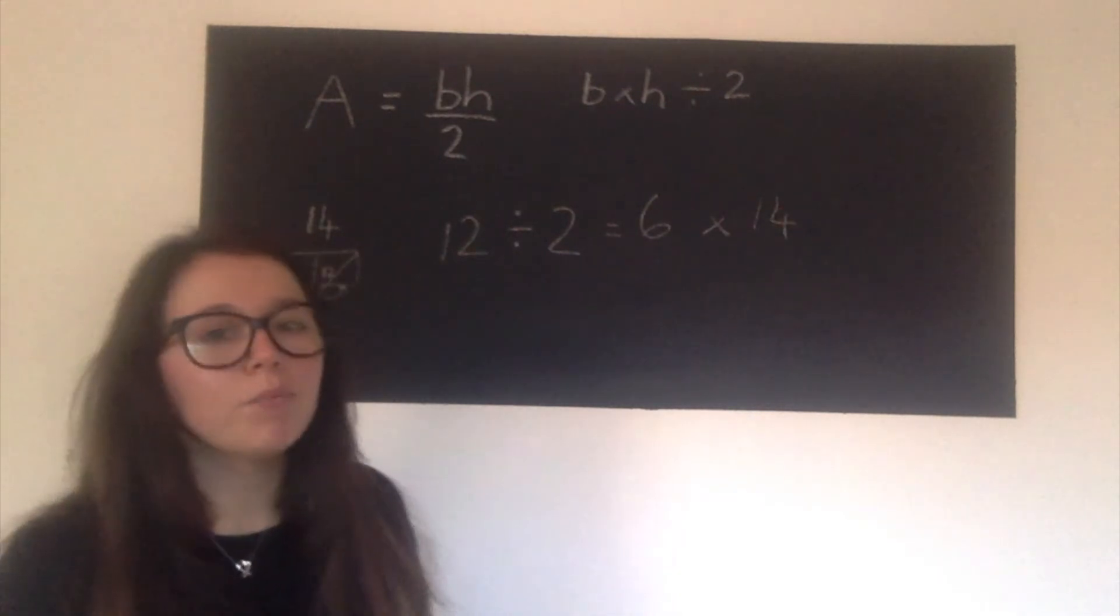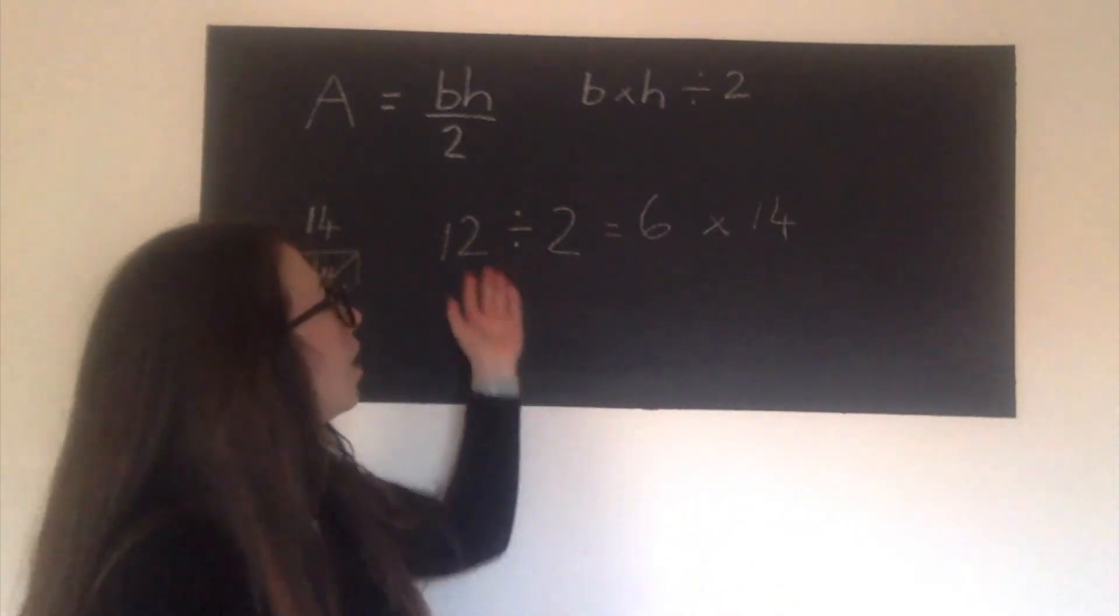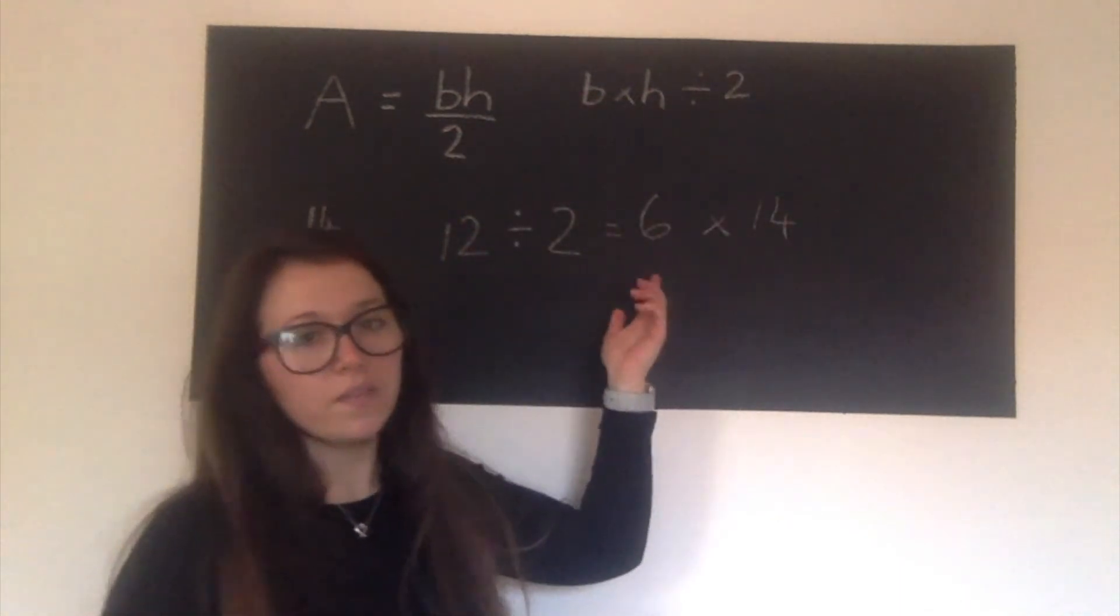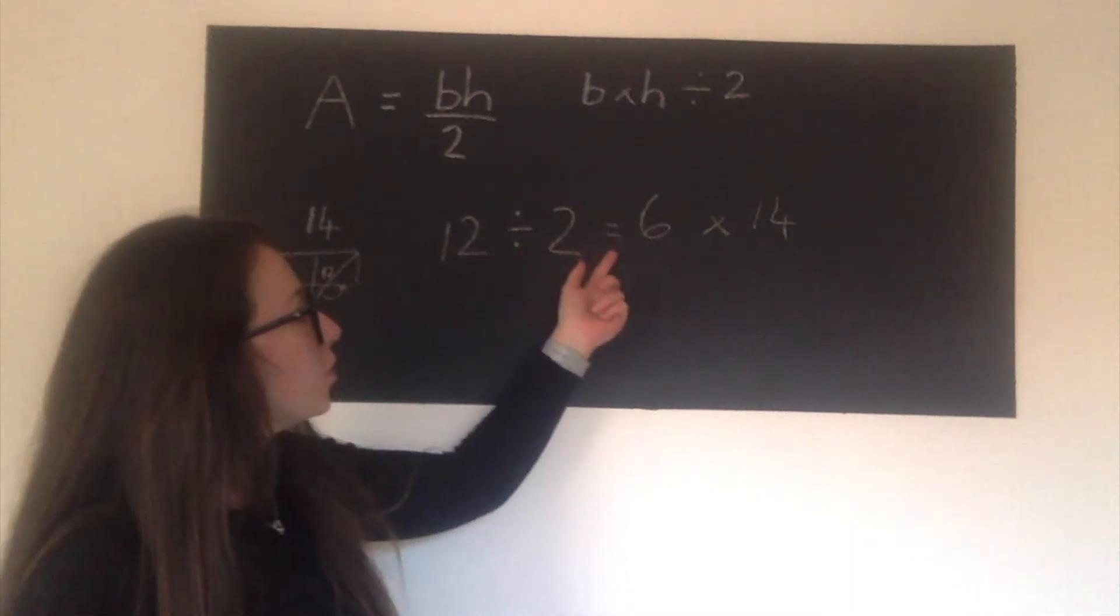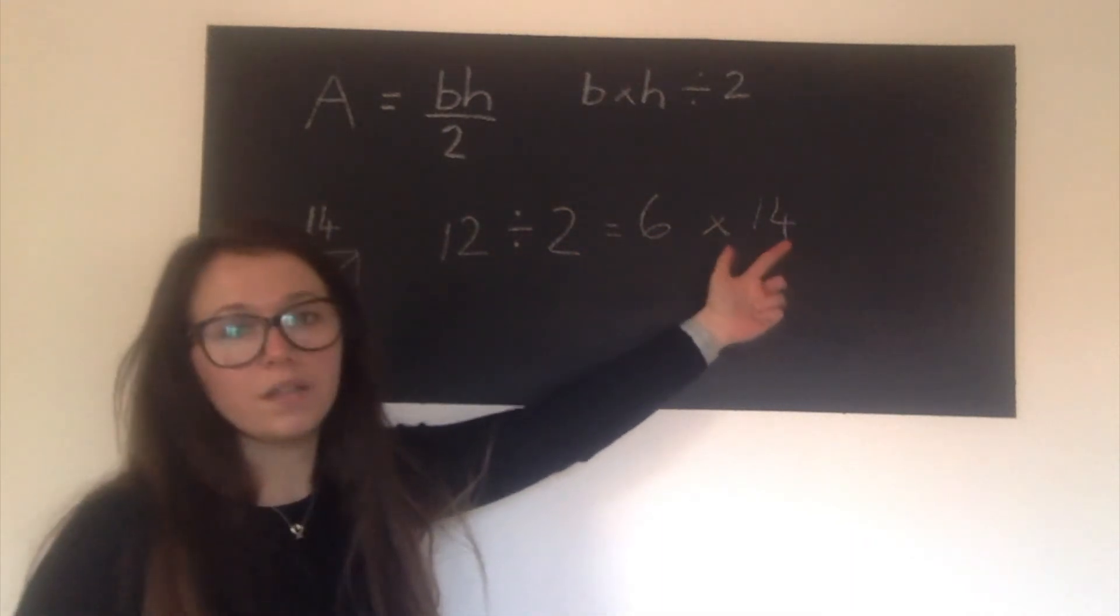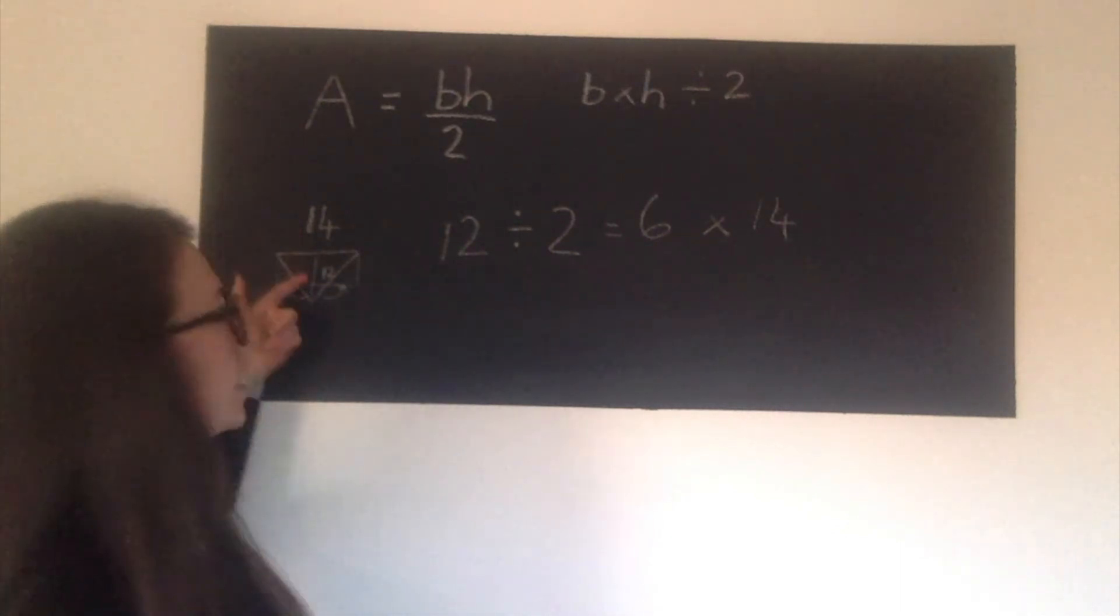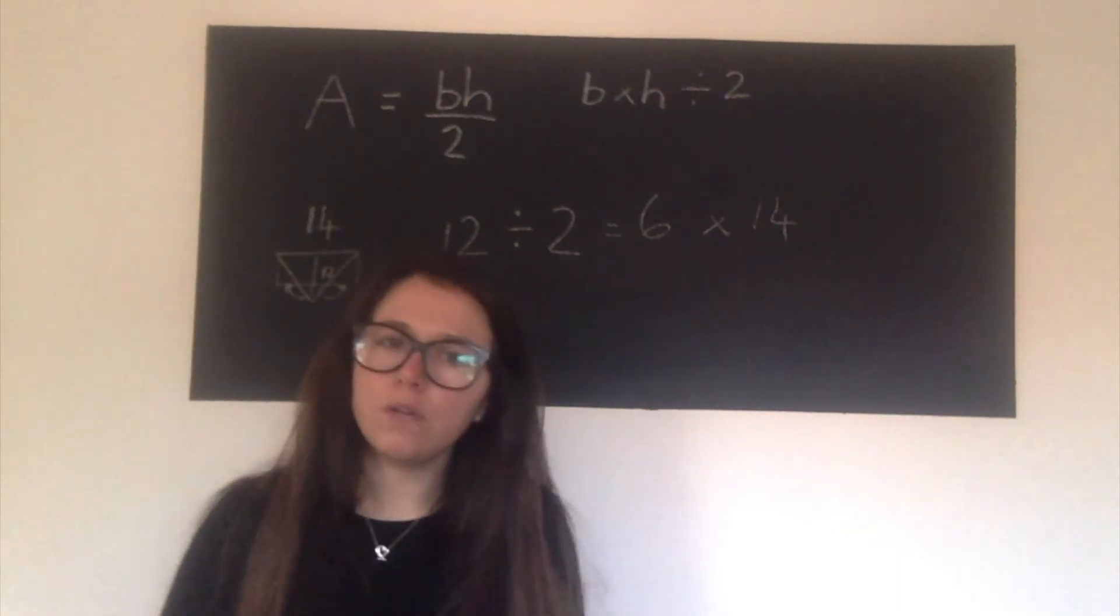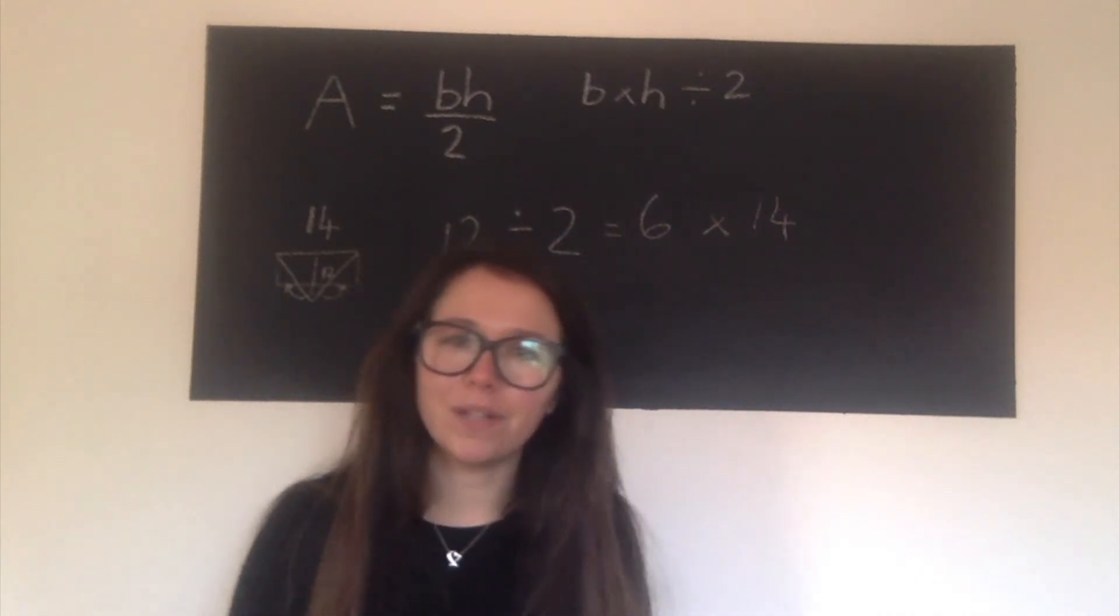I want you to have a think about, I'm not going to go through it, but have a think about if there is another way that you could work out that formula. Now, I think this has possibly made the calculation easier because we can do 12 divided by two and six times 14 is a much easier calculation than our first calculation, which was 14 times by 12. Do you think that would impact the answer and the area of that triangle? Have a think about it and let me know any of your thoughts.